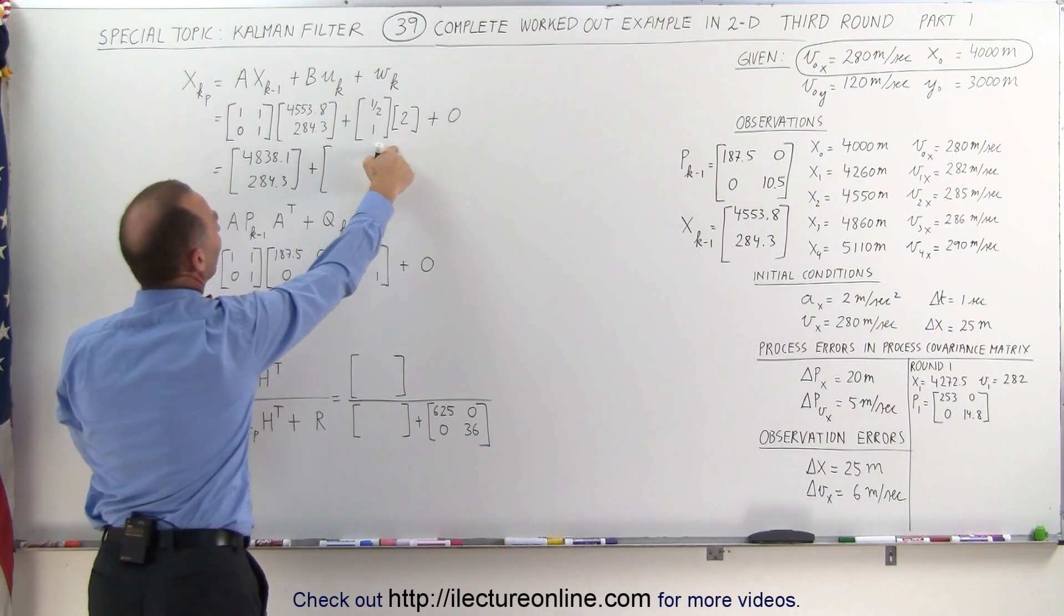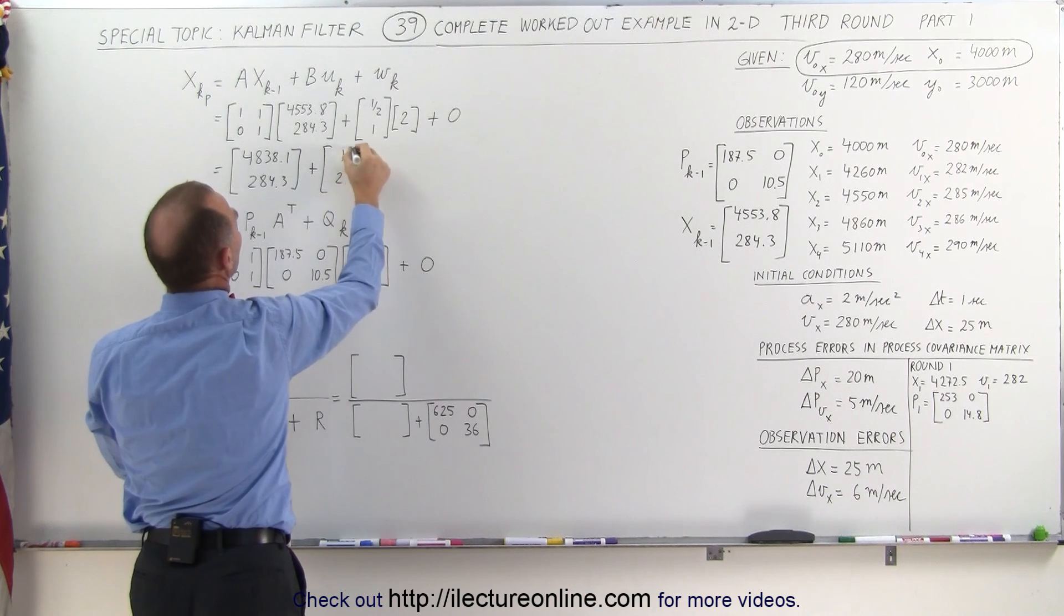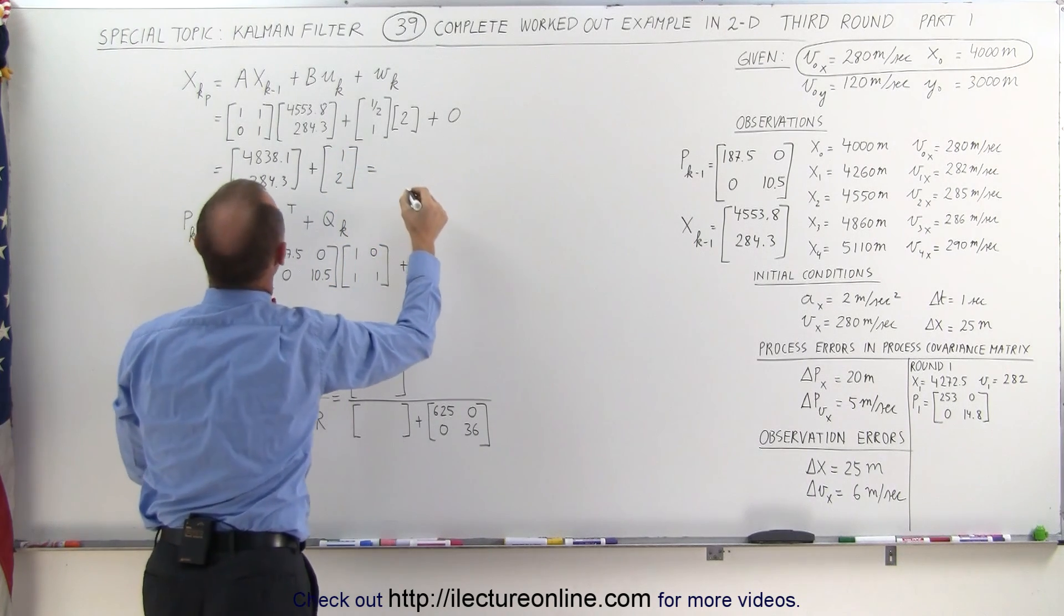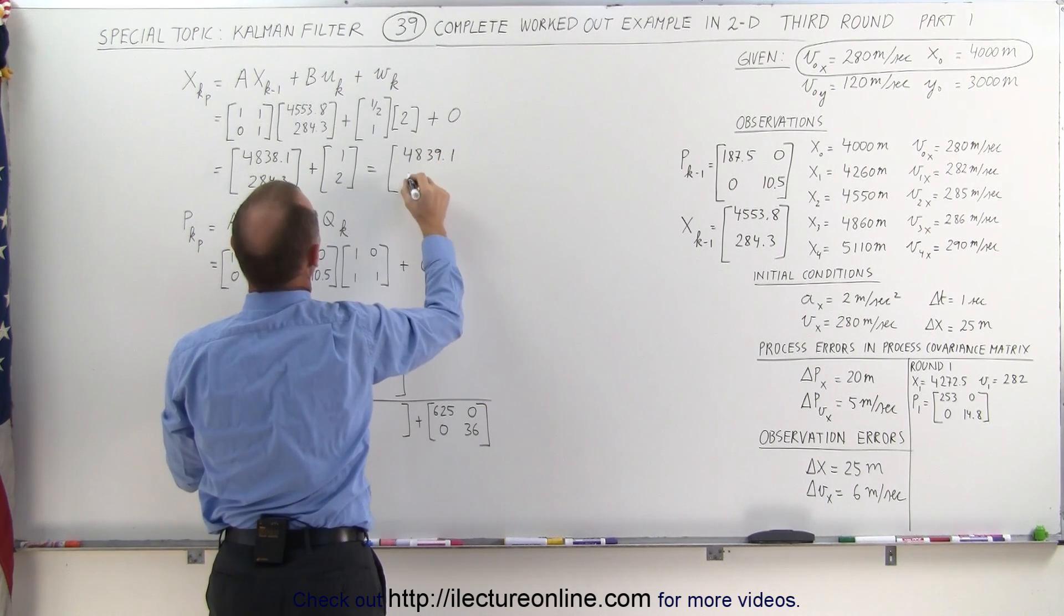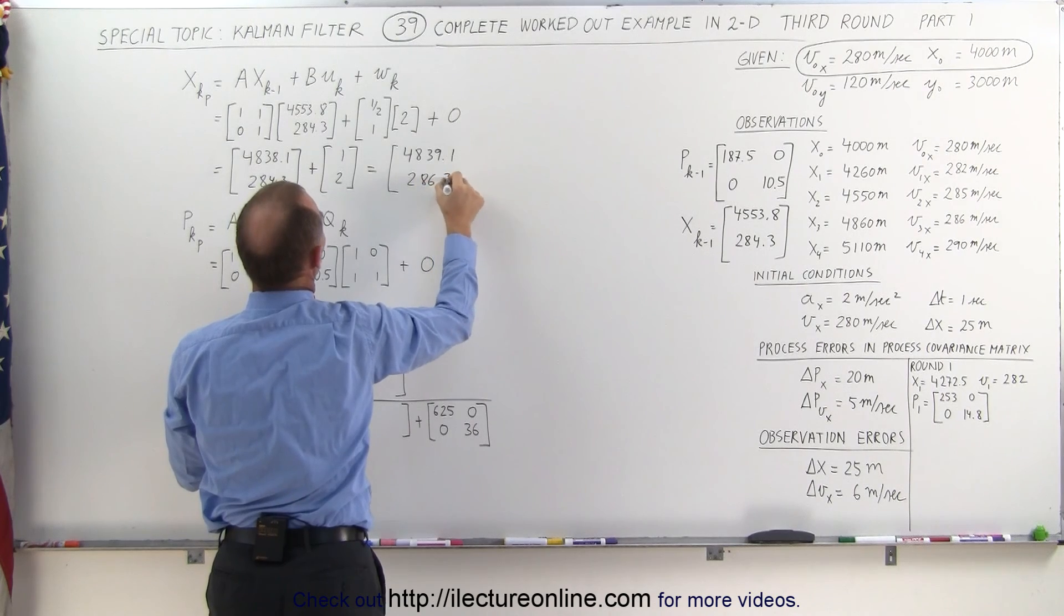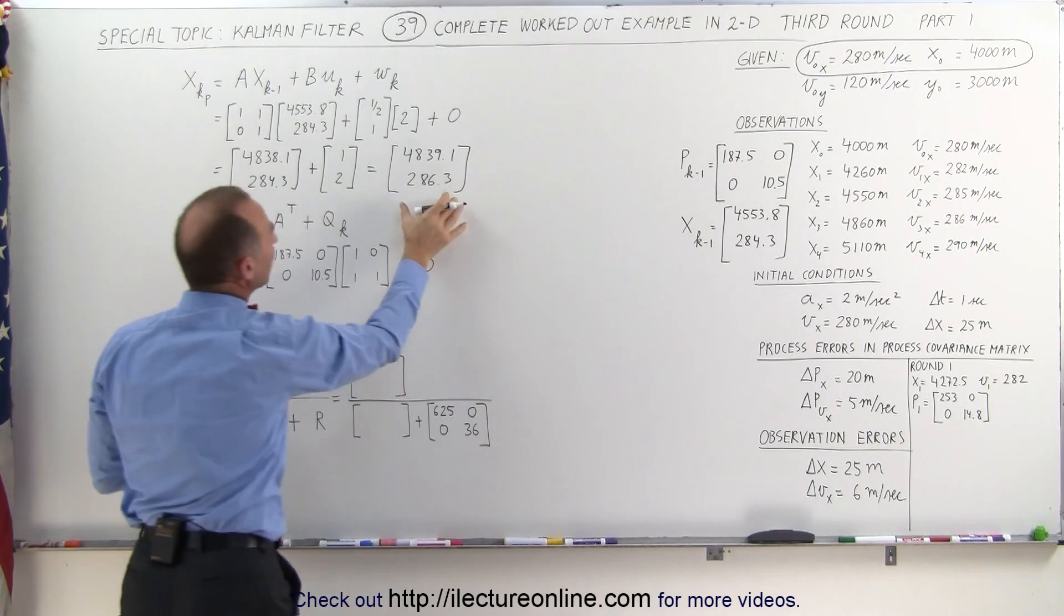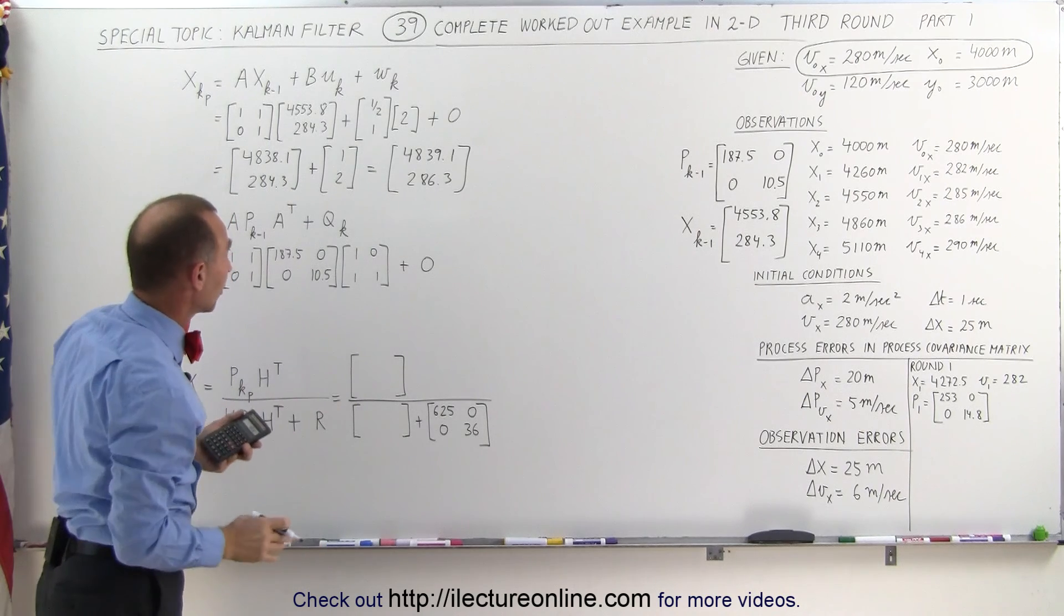After that, the effect of the acceleration, a1 and a2, and so that becomes equal to, in the numerator, we get 4839.1. In the denominator, we get 286.3. That will be the new predicted matrix, or state matrix.